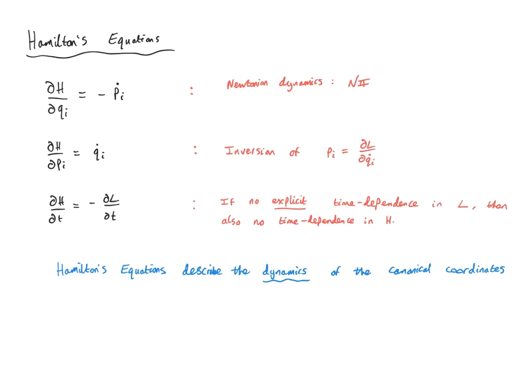Specifically, if we know the Hamiltonian H, we can find ṗ and q̇. Integrating these gives the phase-space trajectories q(t) and p(t), which tell you everything you need to know about the system. The Hamiltonian determines the trajectory in phase space. Although it's often equated with just the energy of the system, it is far more than that — it determines the dynamics. Furthermore, the Hamiltonian is not necessarily always equal to the energy, but it always exists and always determines the dynamics.